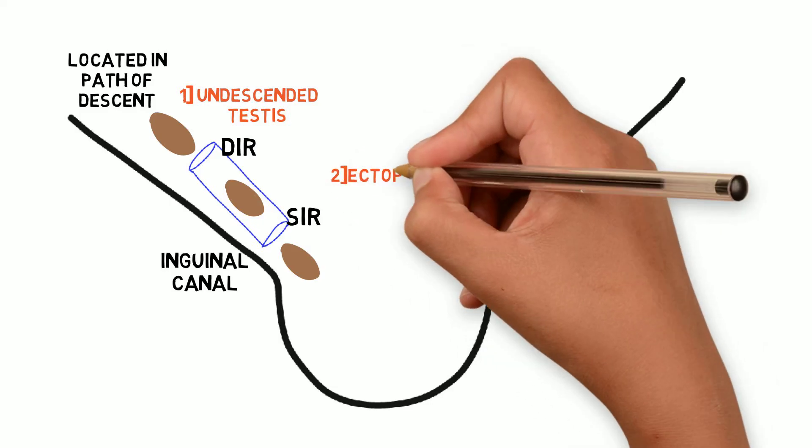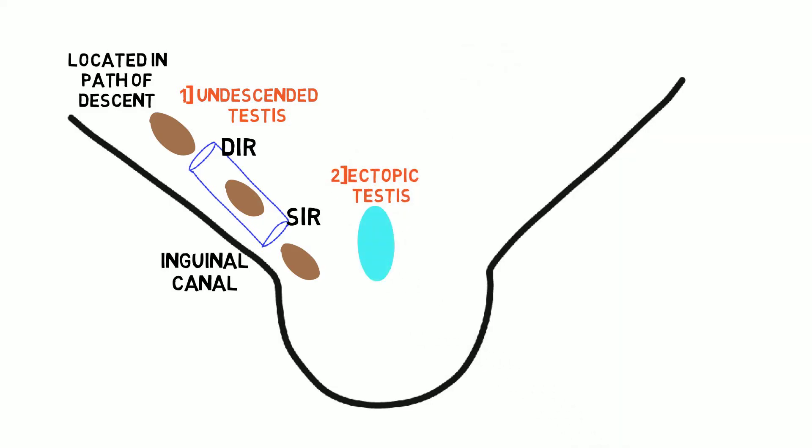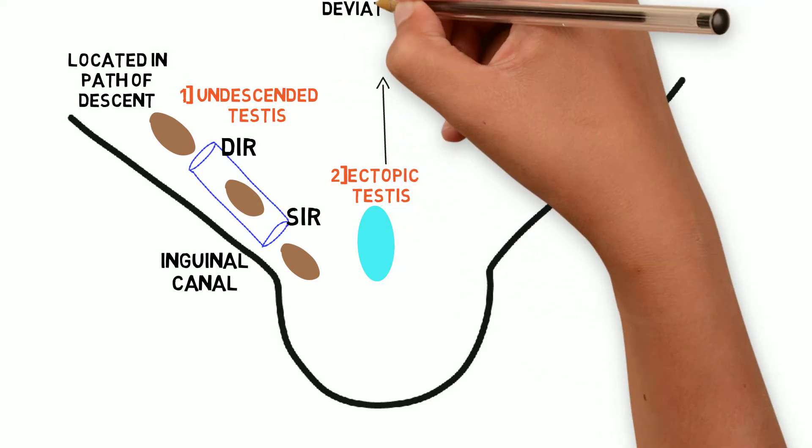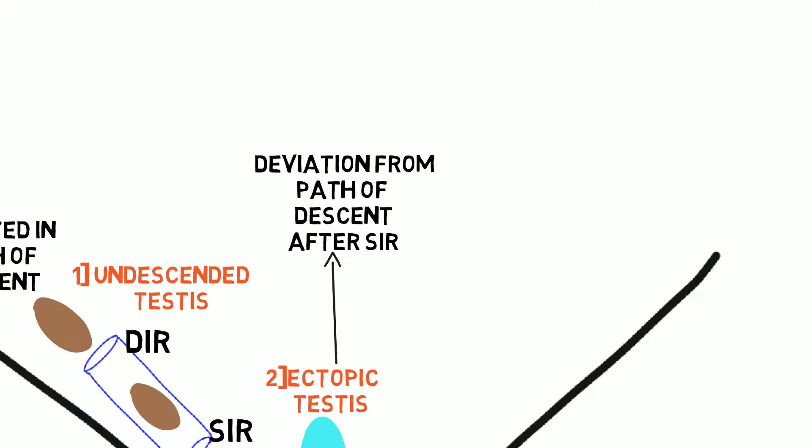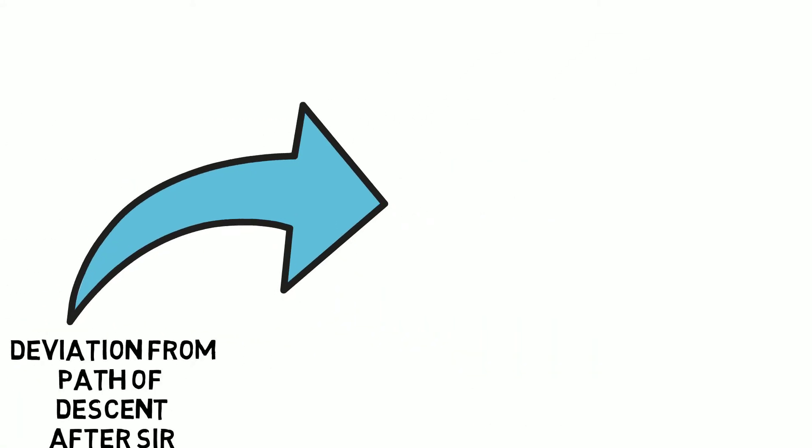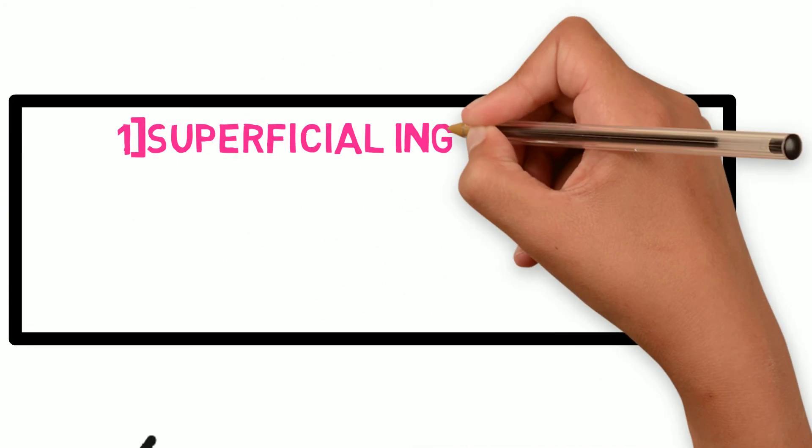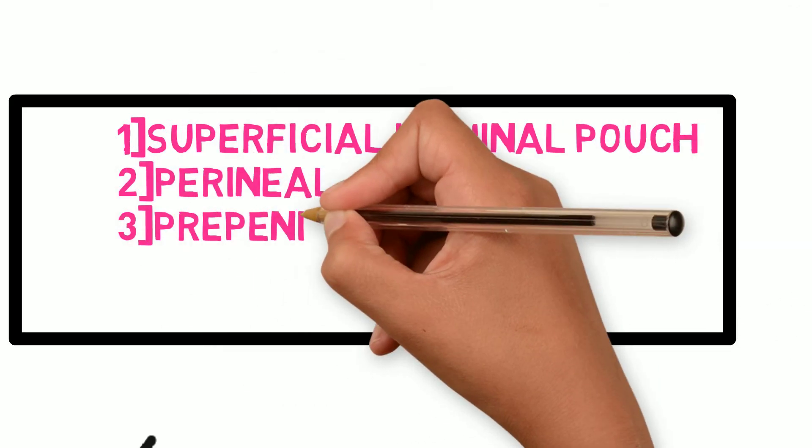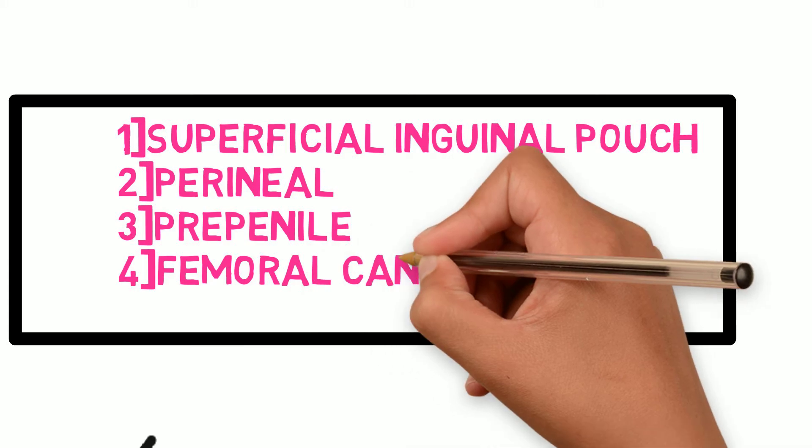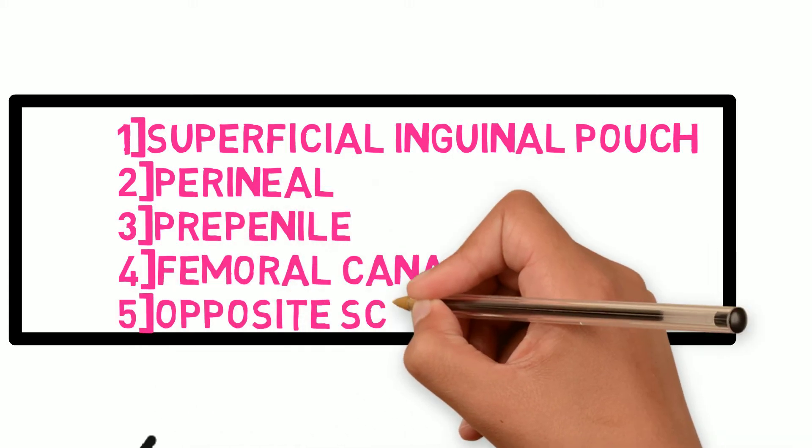Second cause is ectopic testis. Here the testis is located away from the path of its descent after coming out of the superficial inguinal ring. The locations of ectopic testis are: superficial inguinal pouch, perineal, prepenile, femoral canal, and opposite scrotum.